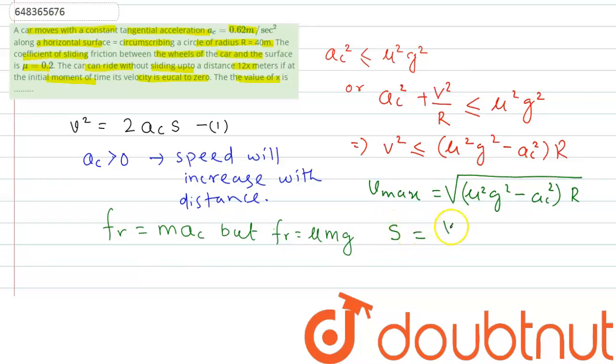We can write v squared max divided by 2 into tangential acceleration. This is our equation 1. From this equation we can write, this distance if we simplify, this distance will be nothing but v squared by 2AC. So this is what we are writing here.